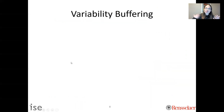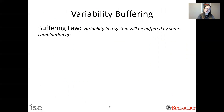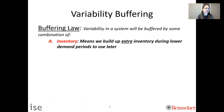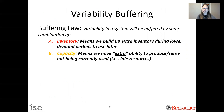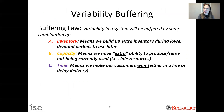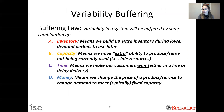That's one way to buffer against variability — using capacity. But you can use other things. You have to buffer against variability using some type of buffer. Variability in a system will be buffered by some combination of inventory, capacity, time, or money.